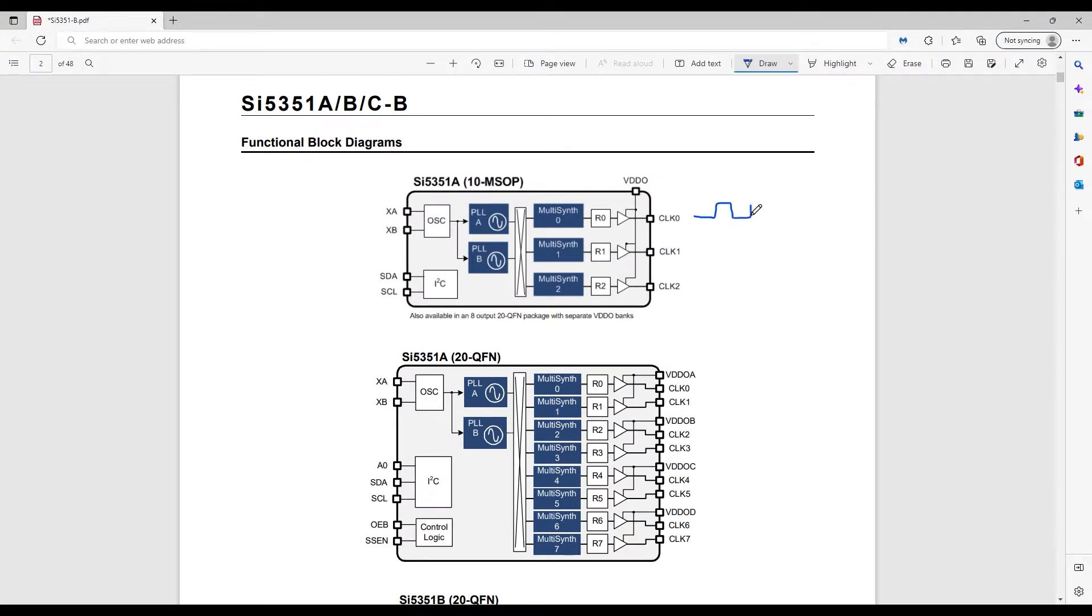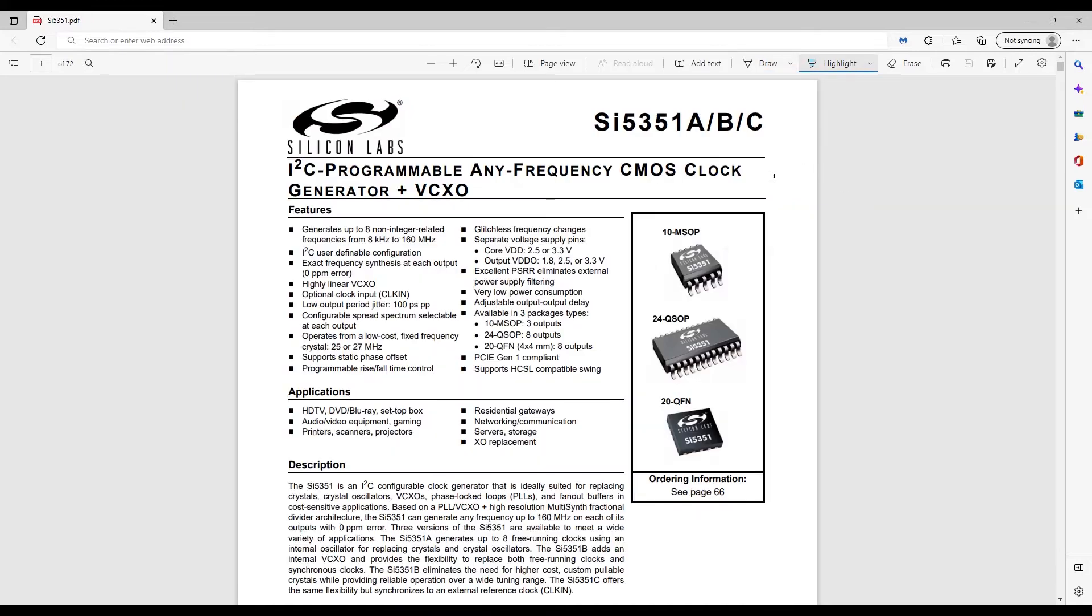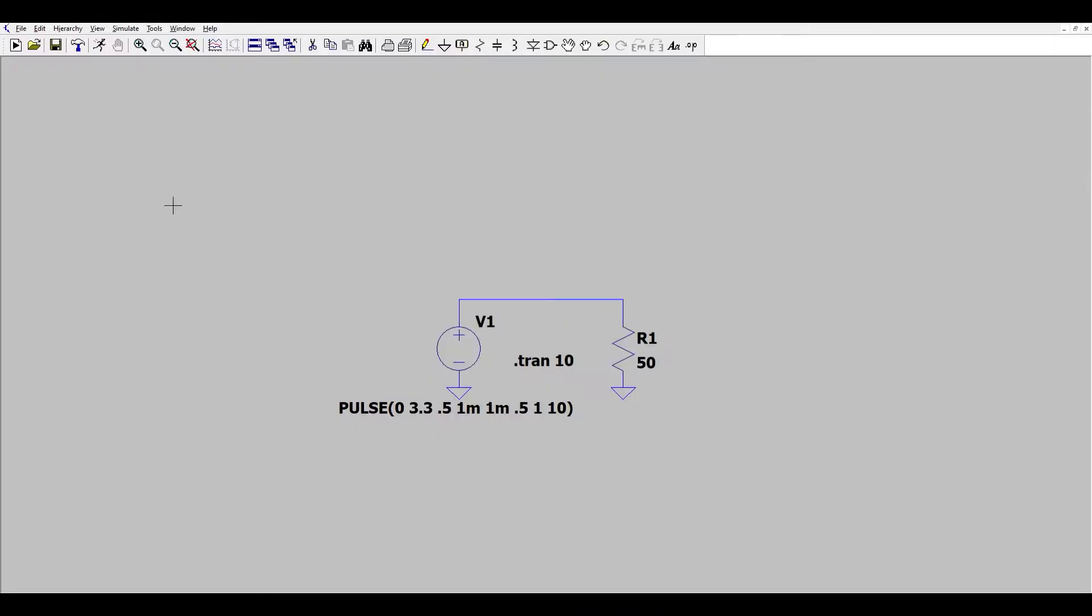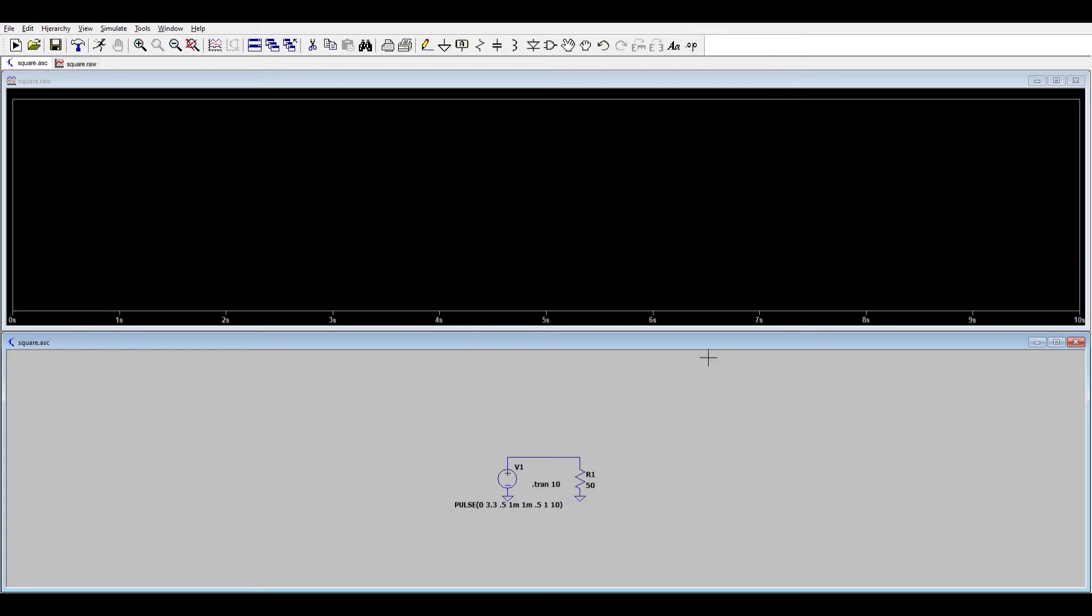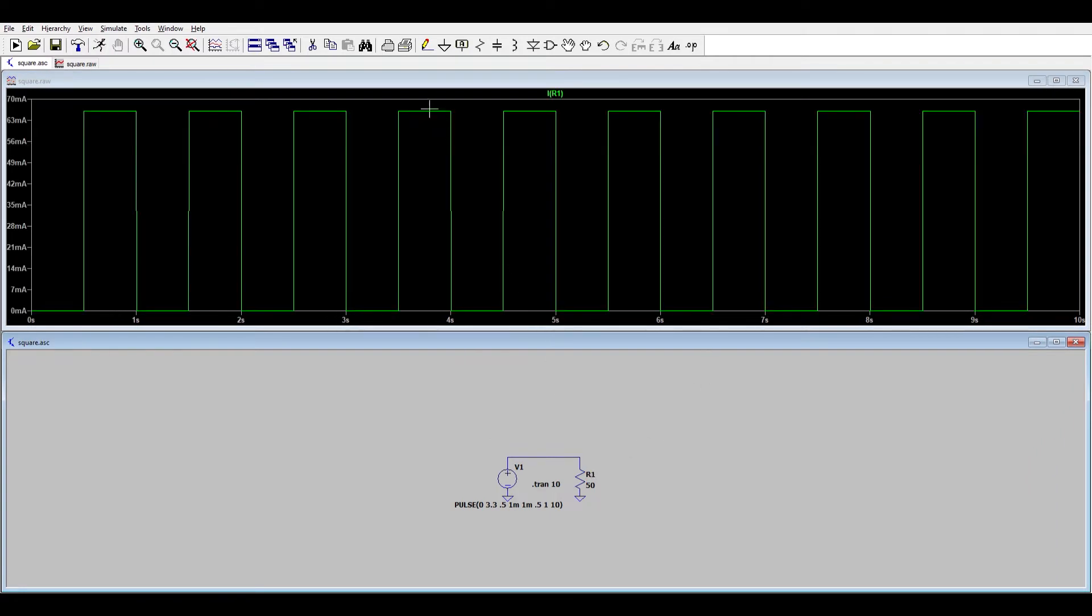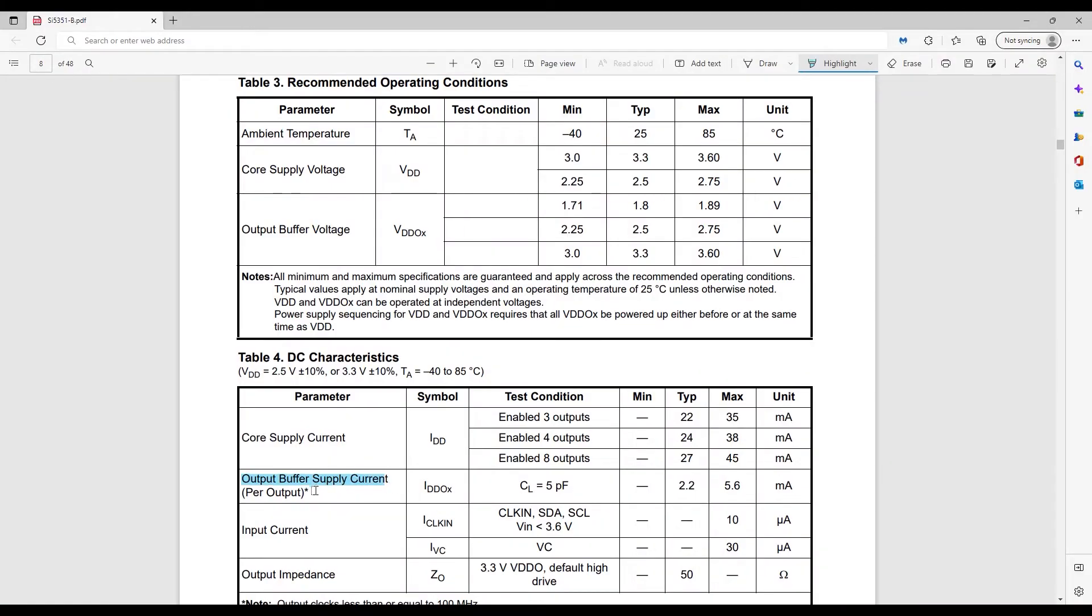A larger issue of concern is potential corruption of the SI5351 output signals. A small but very mighty detail about the SI5351 is it's a CMOS-level clock generator, which means it's designed to source very little current from its outputs. A simple calculation shows that a 50 ohm load connected to the 3.3 volt peak signal output will try to draw about 66 milliamps. The SI5351 is rated for 5.6 milliamps maximum, so that's a problem right there.